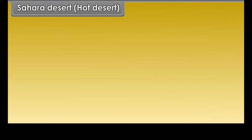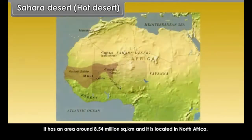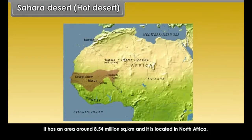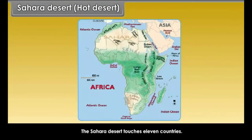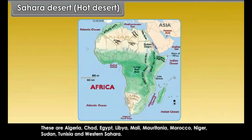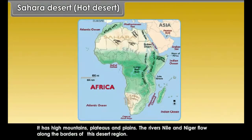Sahara Desert — Hot Desert. Sahara is the largest desert of the world, with an area of around 8.54 million square kilometers, located in North Africa. It extends across the continent from the Atlantic Ocean in the west to the Red Sea in the east. The Sahara Desert touches 11 countries: Algeria, Chad, Egypt, Libya, Mali, Mauritania, Morocco, Niger, Sudan, Tunisia, and Western Sahara. It has high mountains, plateaus, and plains.